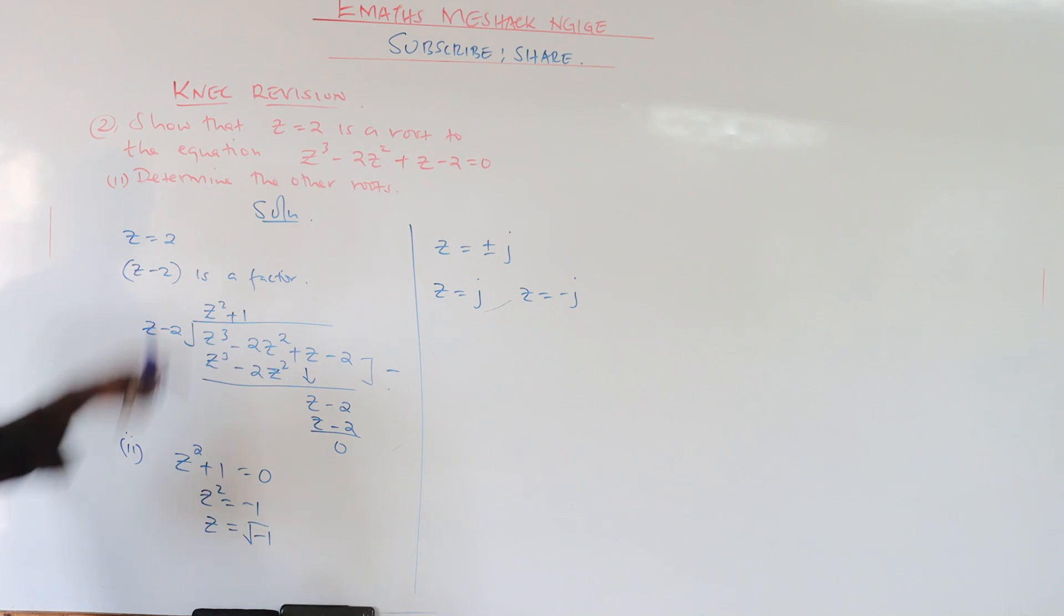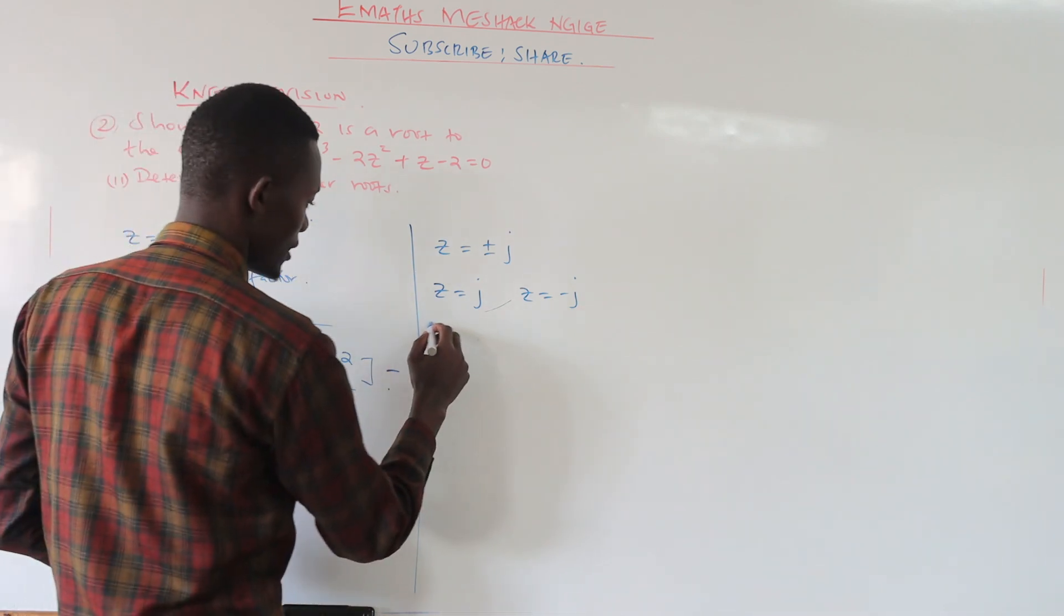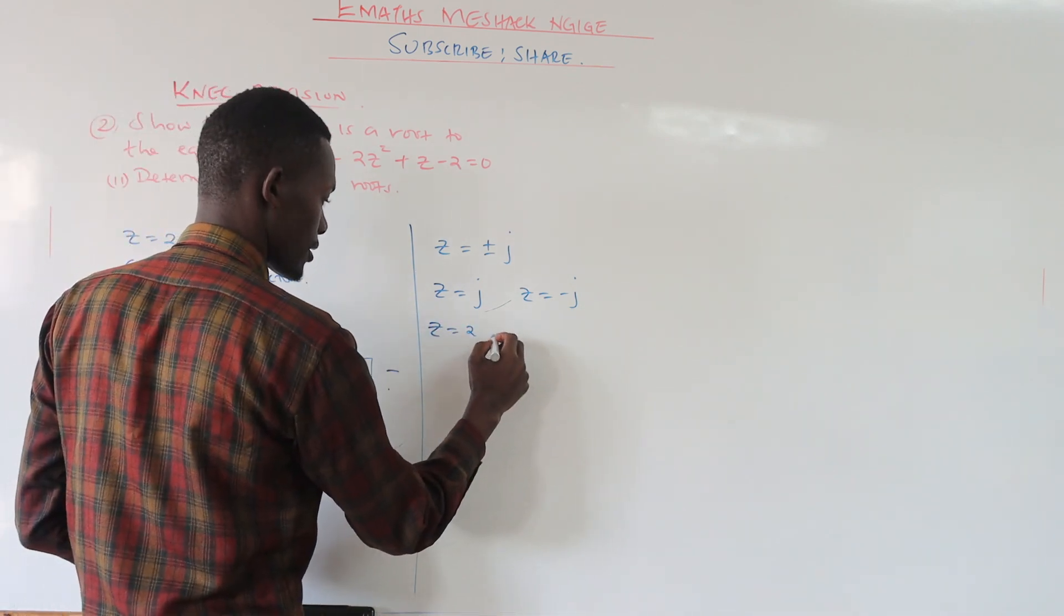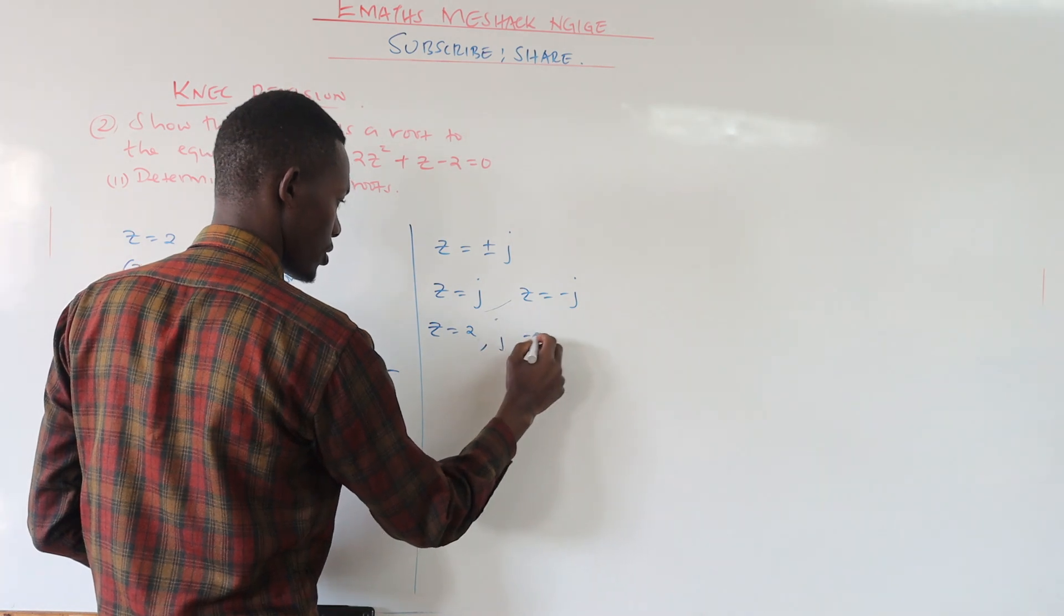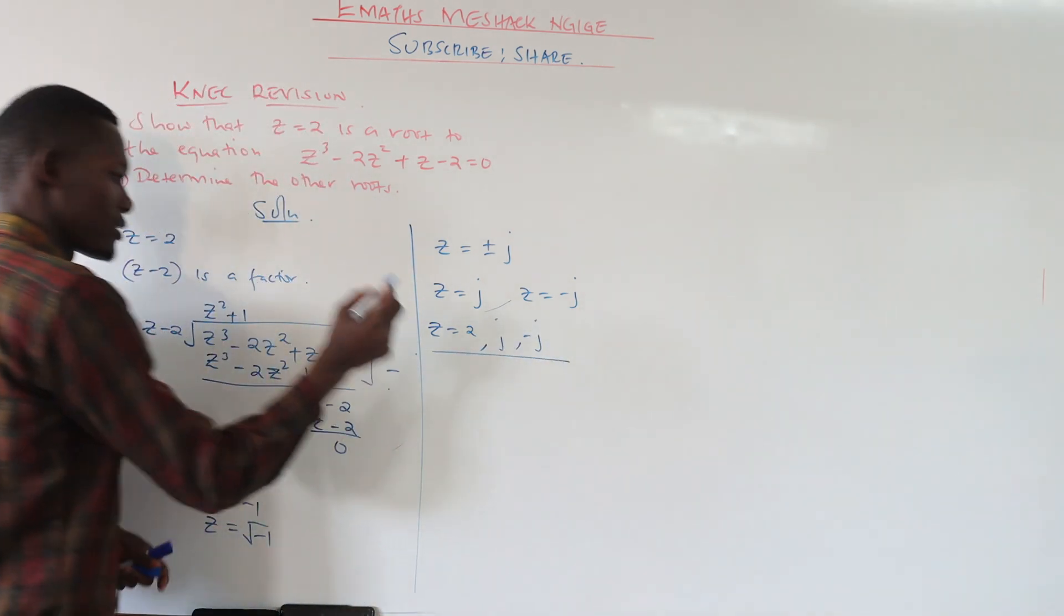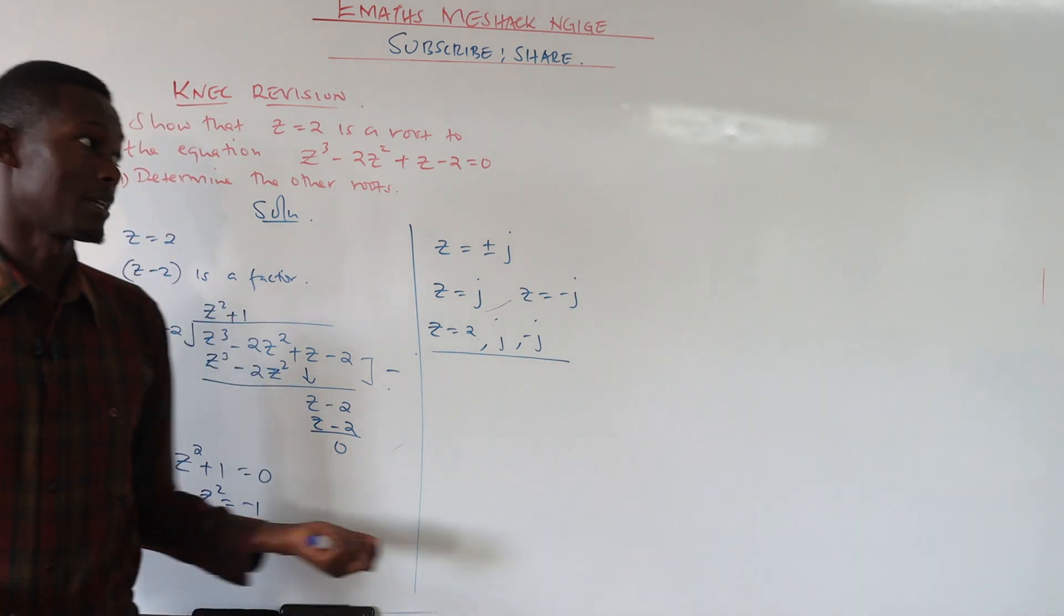The other roots are z equals j and z equals negative j. Your total roots for this equation will be z equals 2 or j or negative j. These three will give you the values of z.